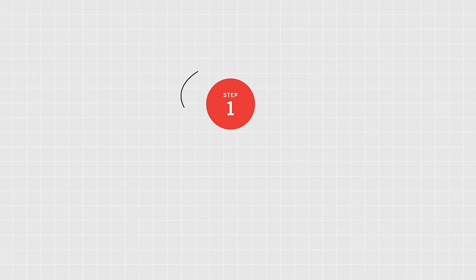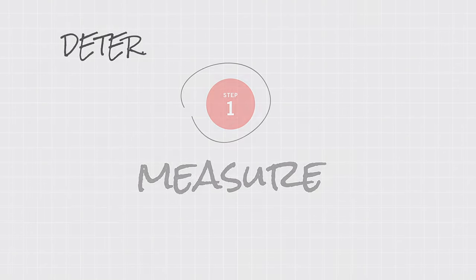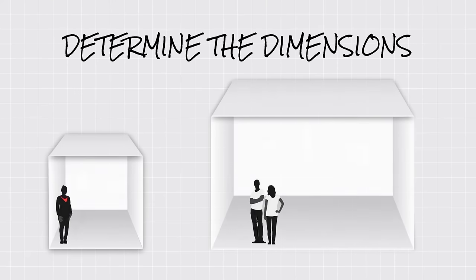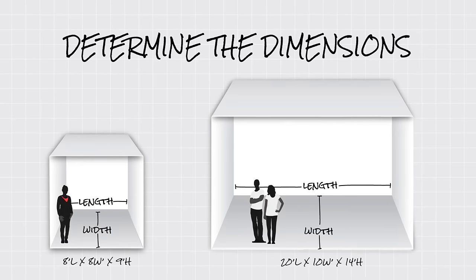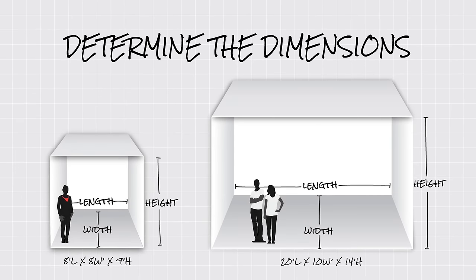Start by measuring the area. First, determine the measurements and mounting heights of the area you would like to heat. Be sure to include the length, width, and height of the area where people will be congregating.